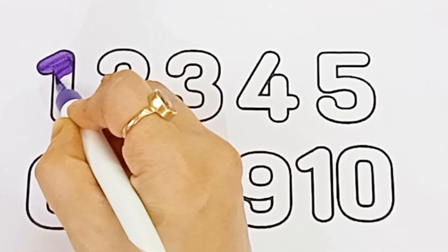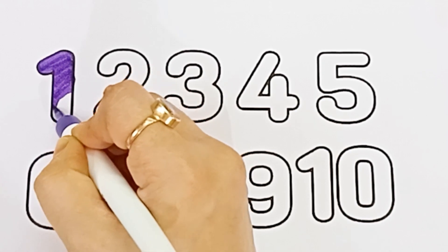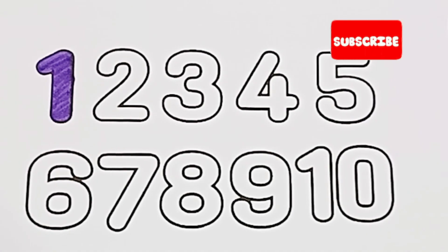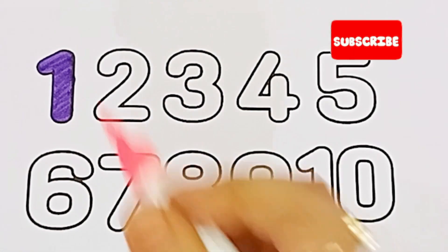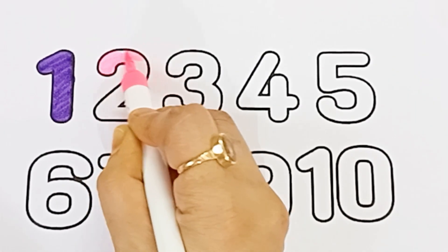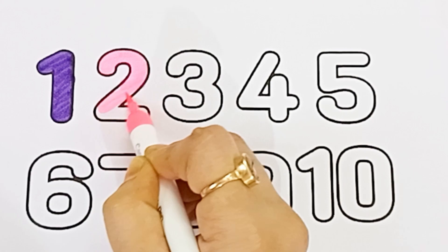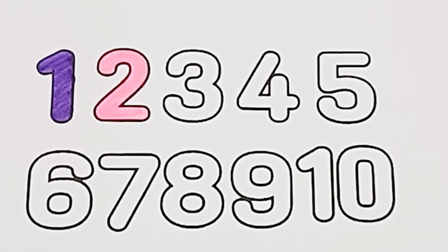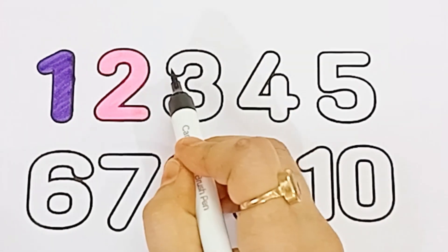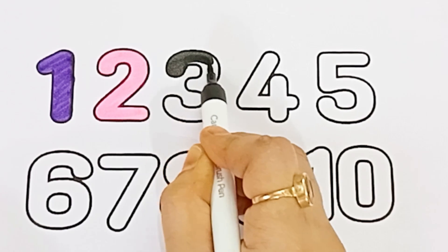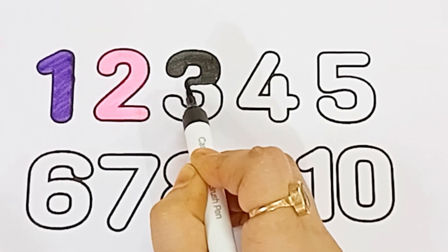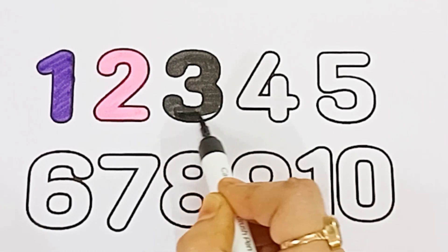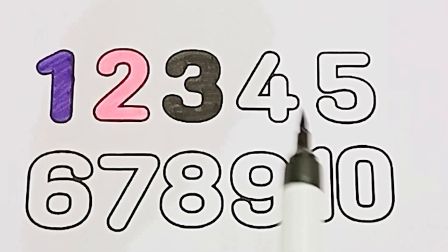Let's learn counting number one to ten. This is purple color. Let's fill the color. Number one — purple color. Number two — light pink color. Number three — black color.